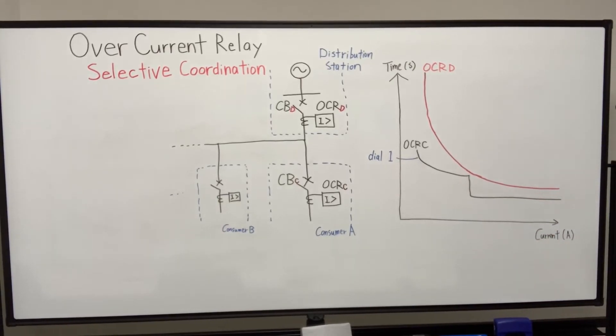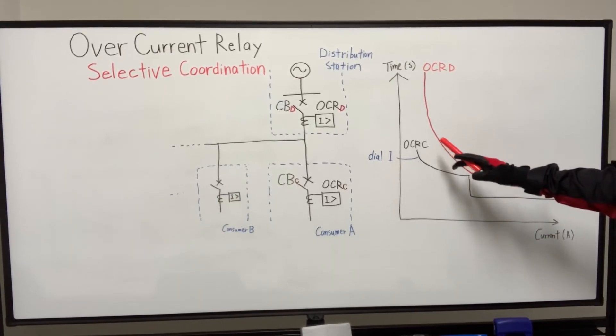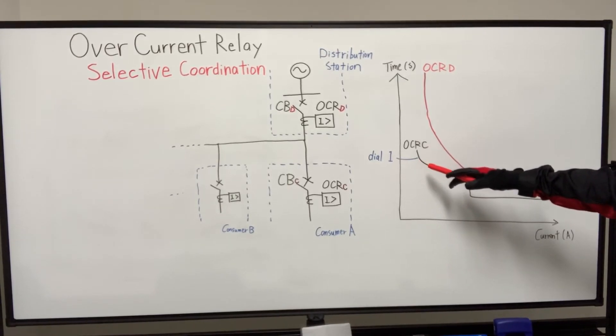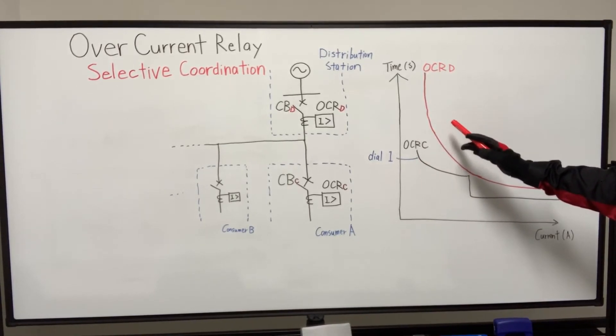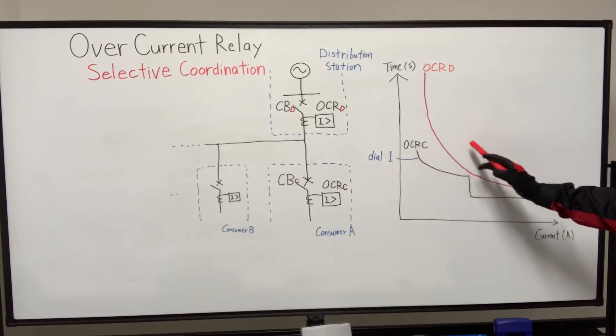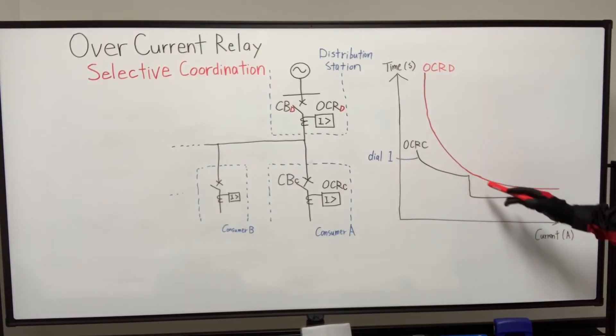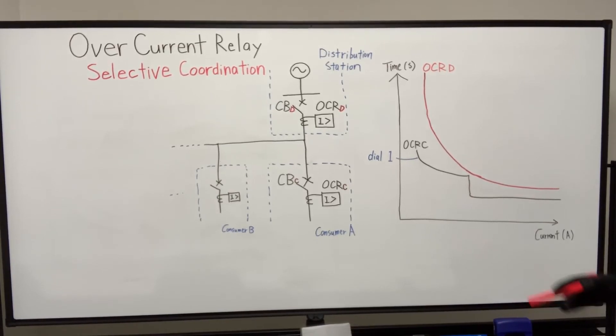Alright, so I adjust the relay C's time dial from five to one. Alright, in this state coordination is accomplished, whatever how much fault current is. It's fine.